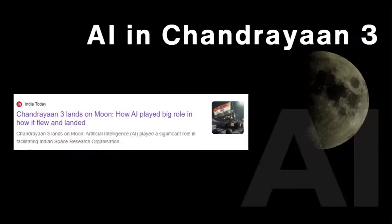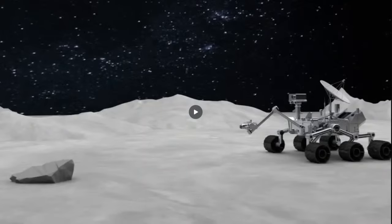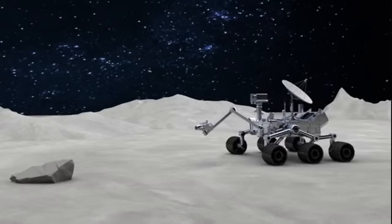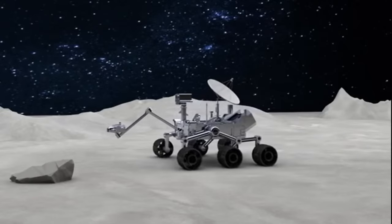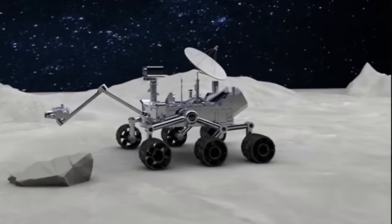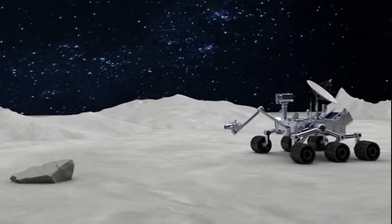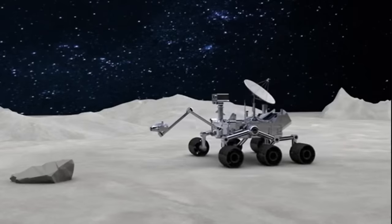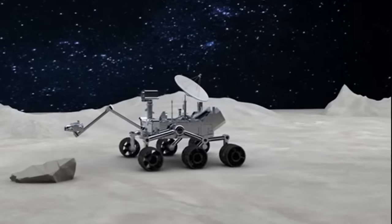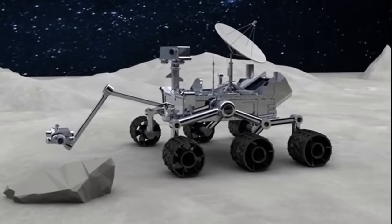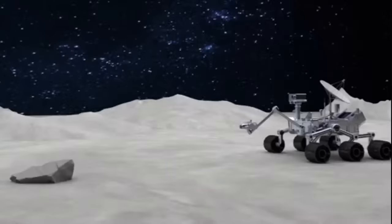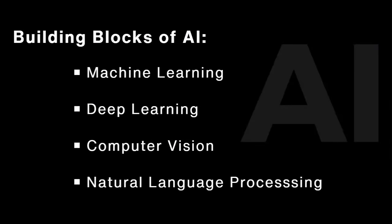One more important thing: we recently successfully landed on the Moon with Chandrayaan 3. AI played a big role — the rover detected a large crater and automatically changed its course. Using cameras and sensors, it detected the crater and automatically retraced its path. They tweeted that the rover found a big crater and retraced its path. So AI played a really important role in Chandrayaan 3 also.